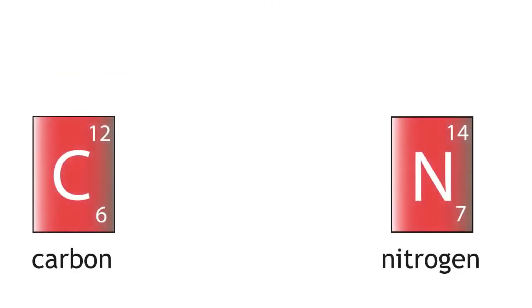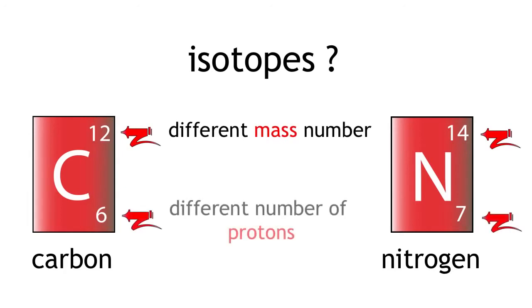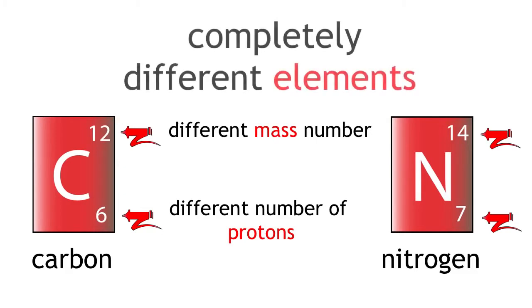If we look at carbon and nitrogen, are they isotopes? They have different mass numbers but they also have a different number of protons. Therefore, they are not isotopes. They are completely different elements.